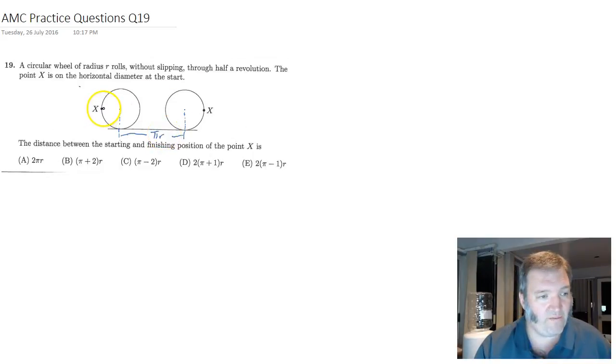But X has moved from the left-hand side there, which was one radius to the left of the center, and it ends up being the length of the radius to the right of the center. So the point X has moved R, plus pi times R, plus another R.